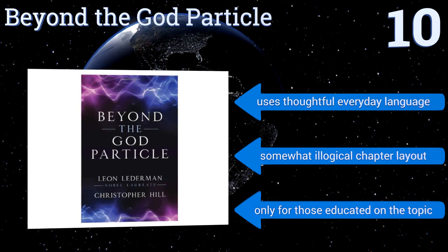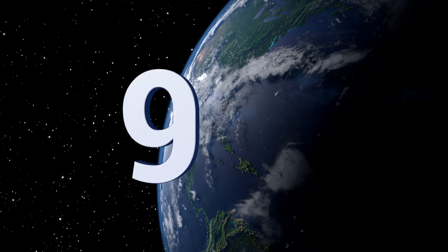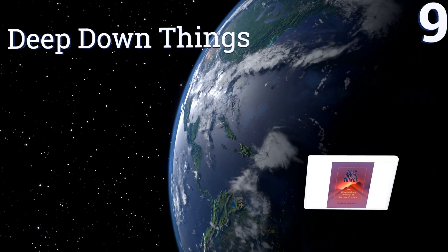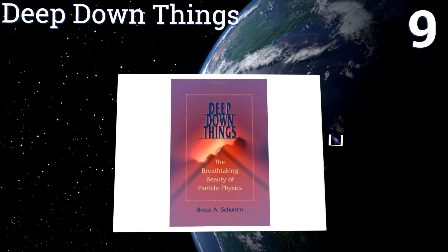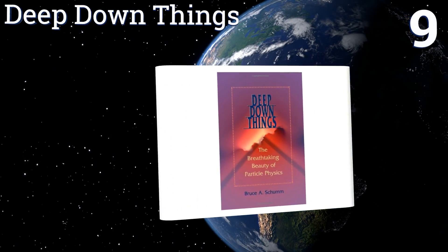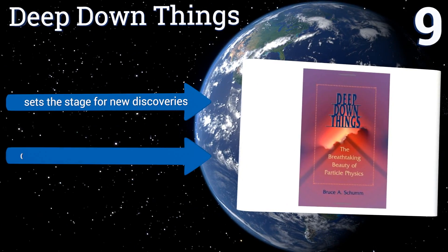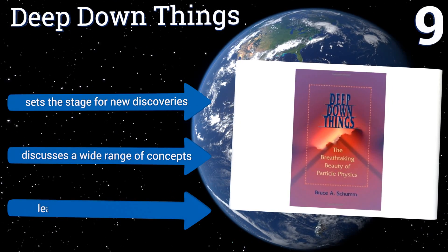At number nine, Deep Down Things explains in a straightforward manner the standard model of particle physics and blends together some of the past century's most notable physicists research. It ends with a questioning note designed to get you thinking, sets the stage for new discoveries, and discusses a wide range of concepts, but it leaves out some vital mathematics.